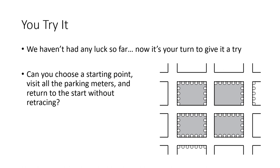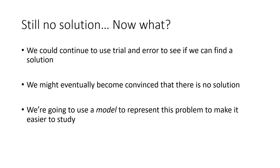Now you give it a try. Pause the video, copy the diagram onto paper, and try a few different starting points and methods — making sure you're trying to check all meters without retracing your steps and returning to your starting point. You probably weren't able to find a solution. It turns out this parking meter problem doesn't actually have a solution, although we're not sure why yet. We could keep using trial and error, but eventually we might think this is an impossible problem. To understand why, we're going to use a model to represent it.